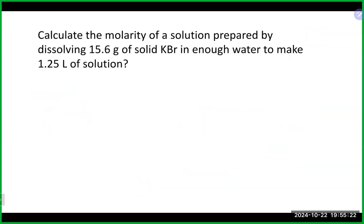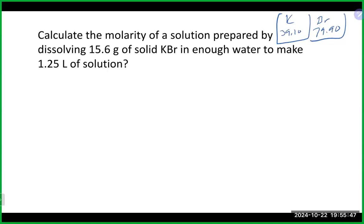Let's calculate the molarity of a solution prepared by dissolving 15.6 grams of KBr in enough water to make 1.25 liters. Potassium is 39.10, bromine is 79.90.